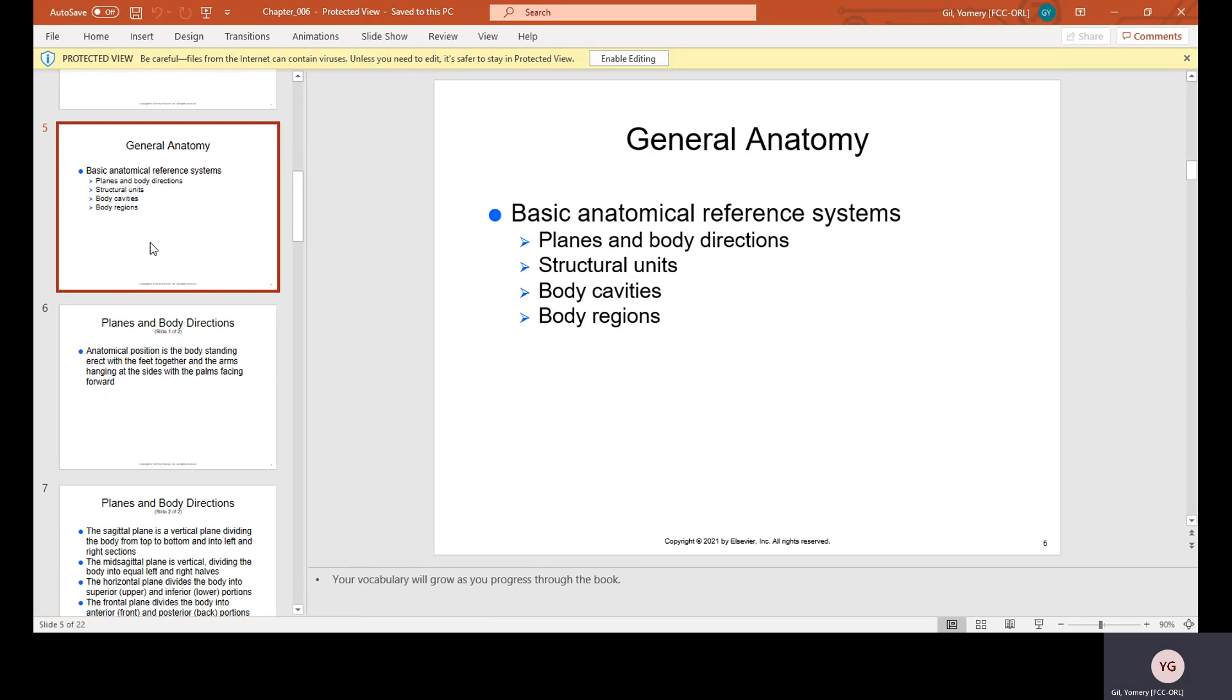General anatomy includes basic anatomical references, planes and body directions, structural units, body cavities, and body regions.